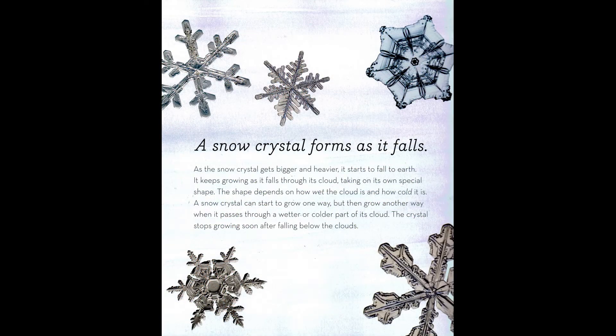A snow crystal forms as it falls. As the snow crystal gets bigger and heavier, it starts to fall to earth. It keeps growing as it falls through its cloud, taking on its own special shape. The shape depends on how wet the cloud is and how cold it is. A snow crystal can start to grow one way, but then grow another way when it passes through a wetter or colder part of its cloud. The crystal stops growing soon after falling below the clouds.